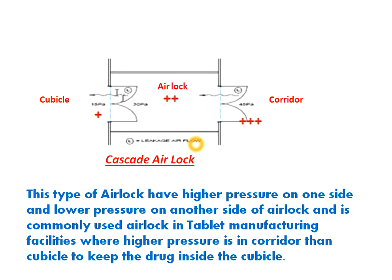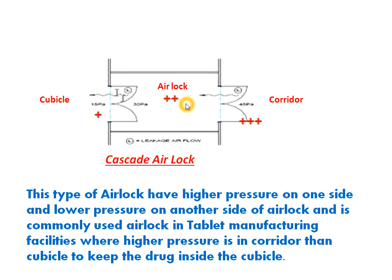First we will see cascade airlock. As shown in the cascade airlock diagram here, the cascade airlock has less pressure compared to the corridor pressure and more pressure compared to the cubicle. The cubicle is the manufacturing area where drugs or medicines are manufactured. Three-plus indicates higher pressure in the corridor, two-plus indicates the airlock, and one-plus indicates minimum pressure in the cubicle.